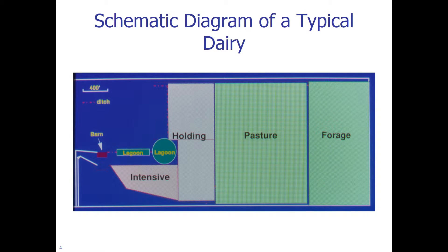Here is a schematic diagram of a typical dairy. The diagram varies substantially depending on the actual dairy, but the key thing to note is that the intensive and holding areas where the cattle are held at night and during feeding are closest to the barn. Therefore, the P release from this area is expected to be highest, versus a pasture or forage area which is further away from the barn and the dairy activities.